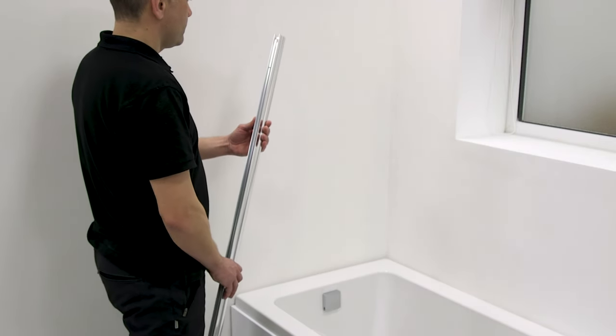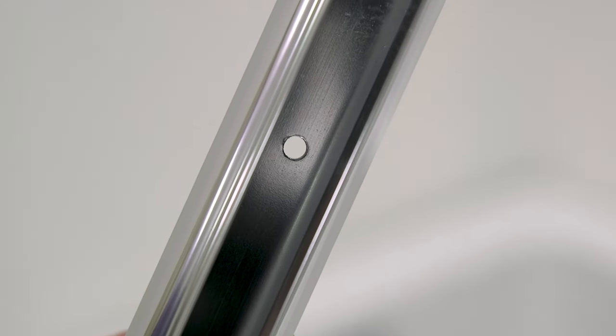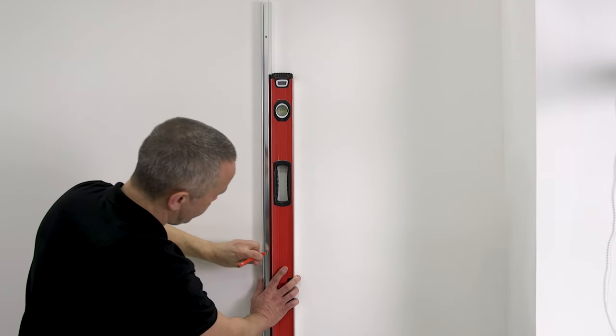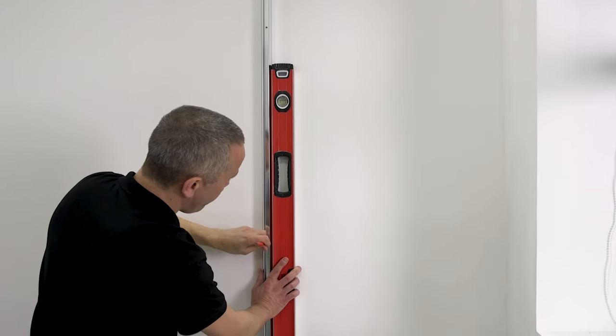Your wall channel should have pre-drilled screw holes. If not, you may need to add these yourself. Offer the channel up to the wall and mark the screw holes using a spirit level to make sure everything is straight.